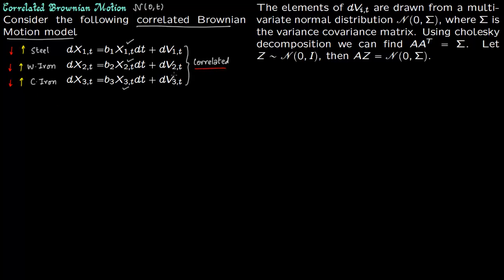So correlation means that you are drawing them, this dV_it that is 1t, 2t and 3t. These are drawn from a multivariate normal distribution. So they are drawn from the same normal distribution and there is a variance covariance matrix sigma.